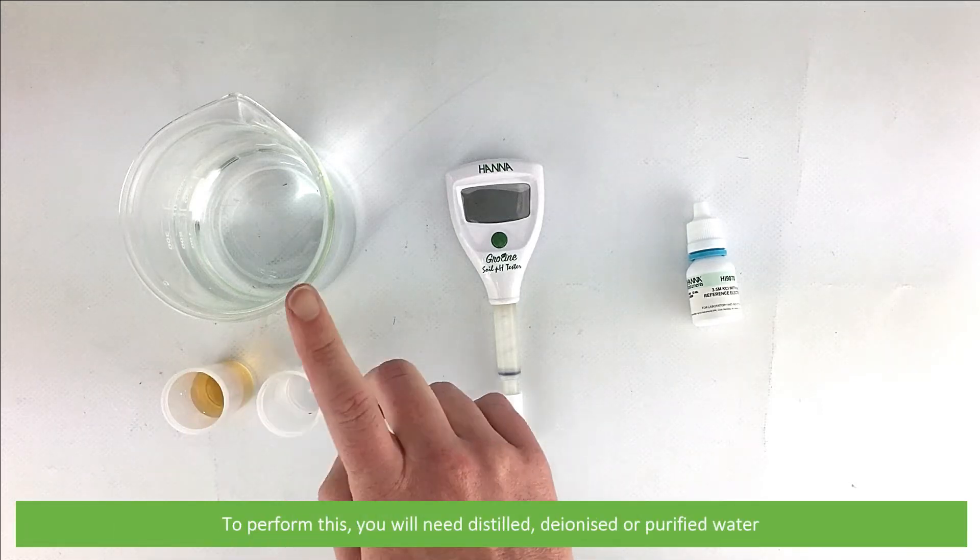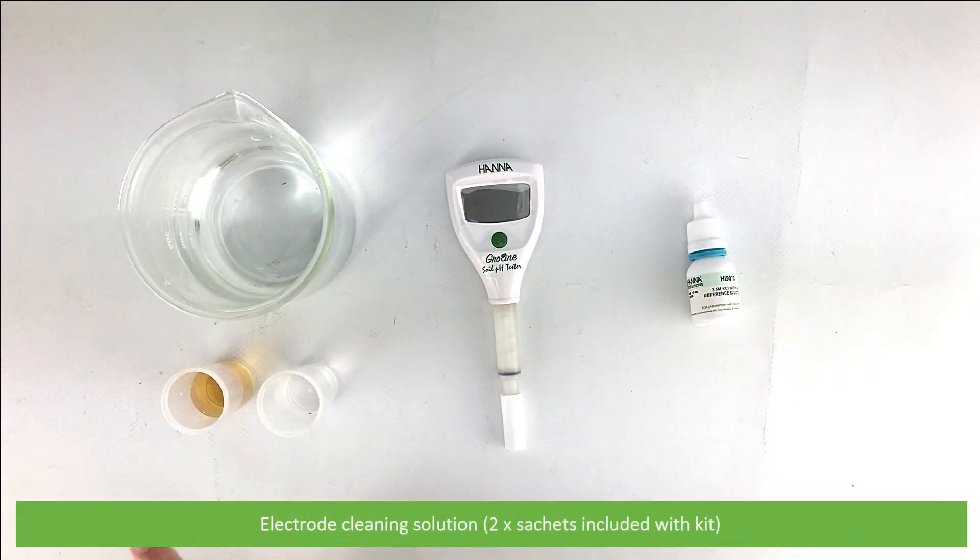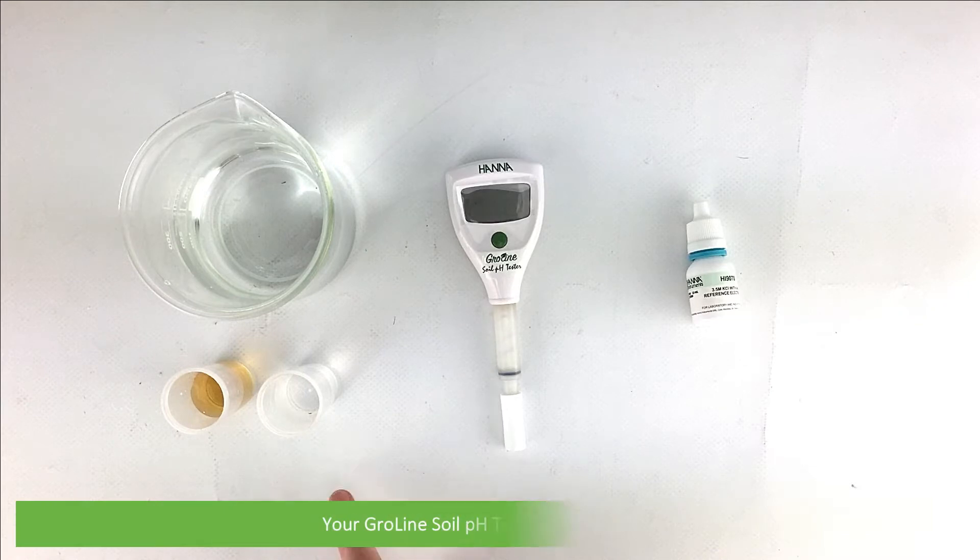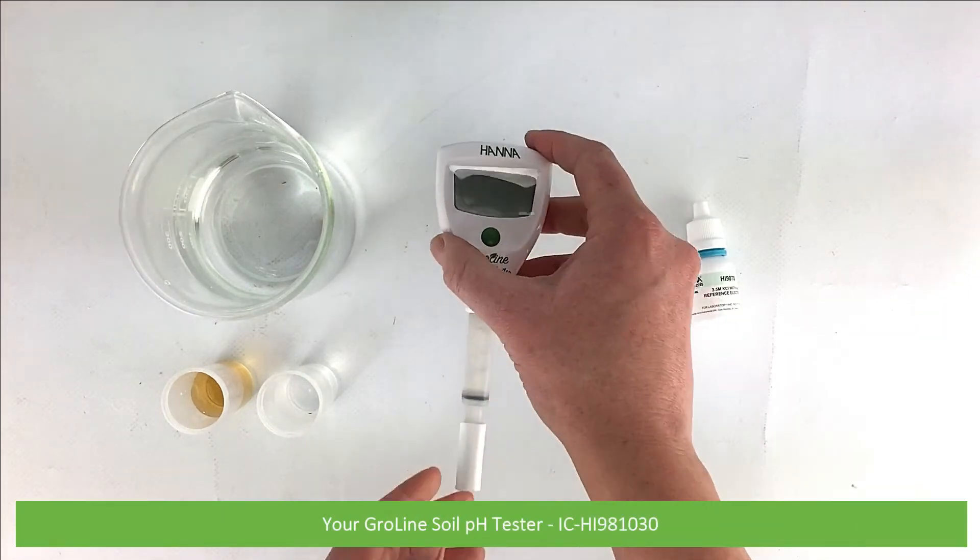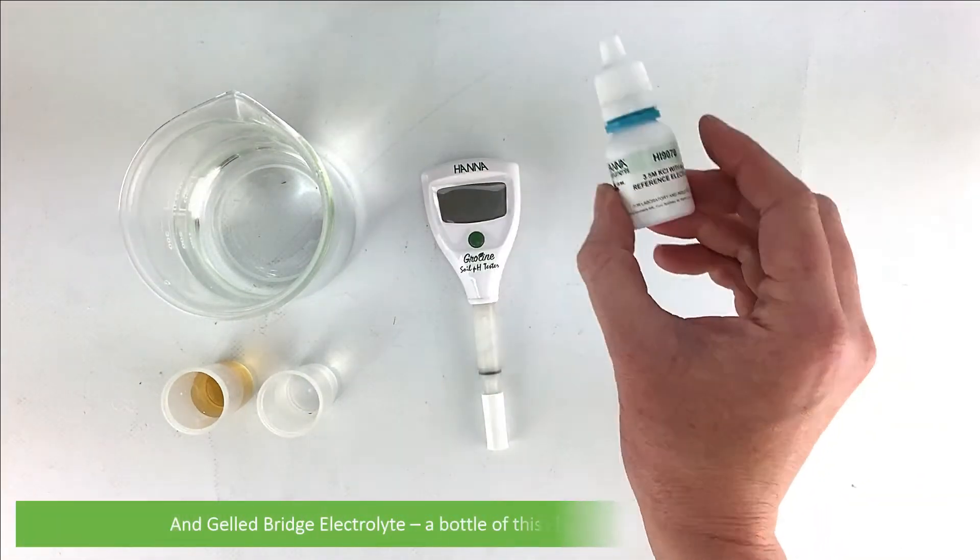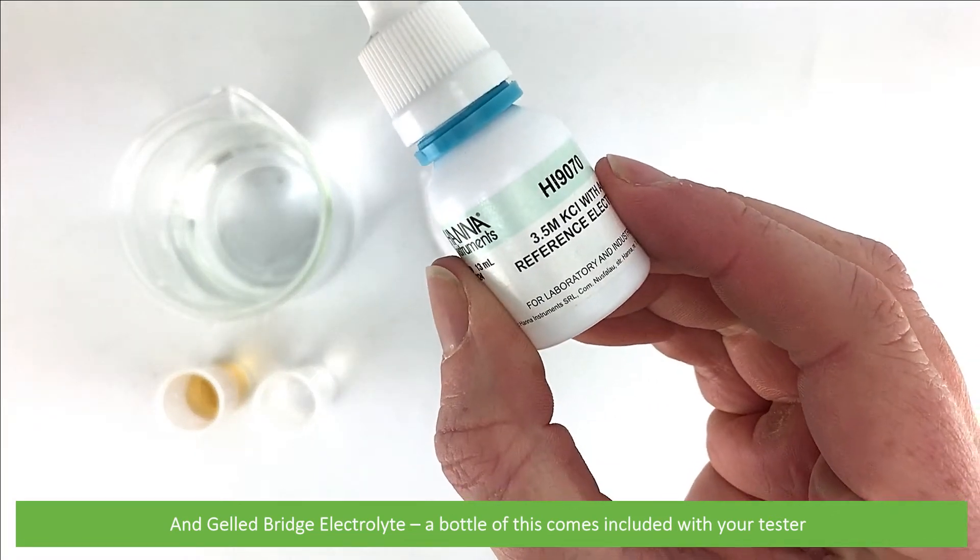To perform this you will need distilled or deionized water, electrode cleaning solution, electrode storage solution, your GroLine Soil pH tester, and gelled bridge electrolyte. A bottle of this comes included with your tester.